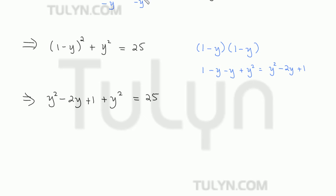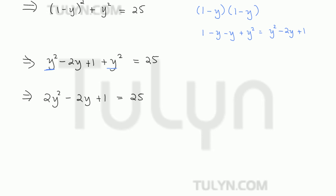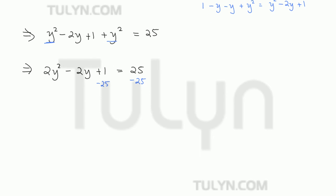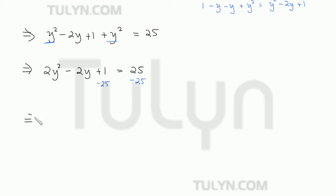So now combining like terms, we have these two y squareds, which we can add together to make 2y squared minus 2y plus 1 is equal to 25. And so the last thing we want to do, since this is going to become a quadratic equation in y, we want to take 25 from both sides. So we have 2y squared minus 2y minus 24 is equal to 0.